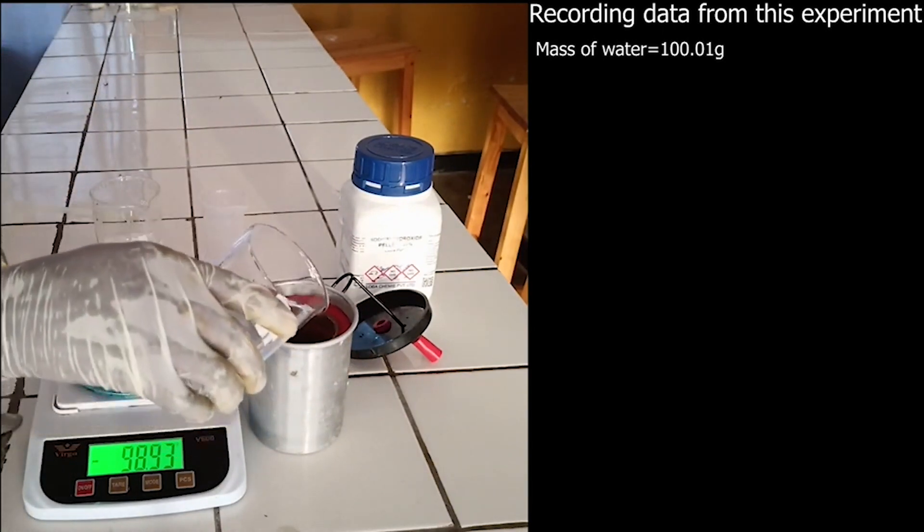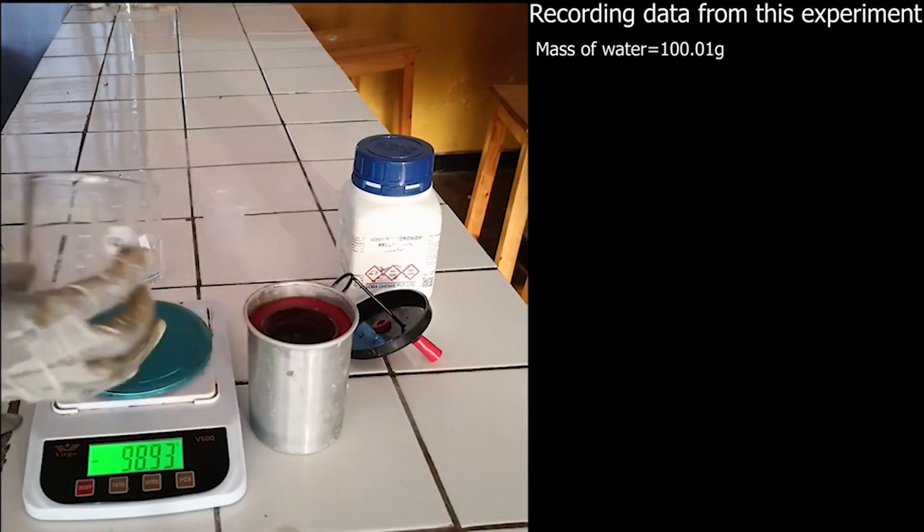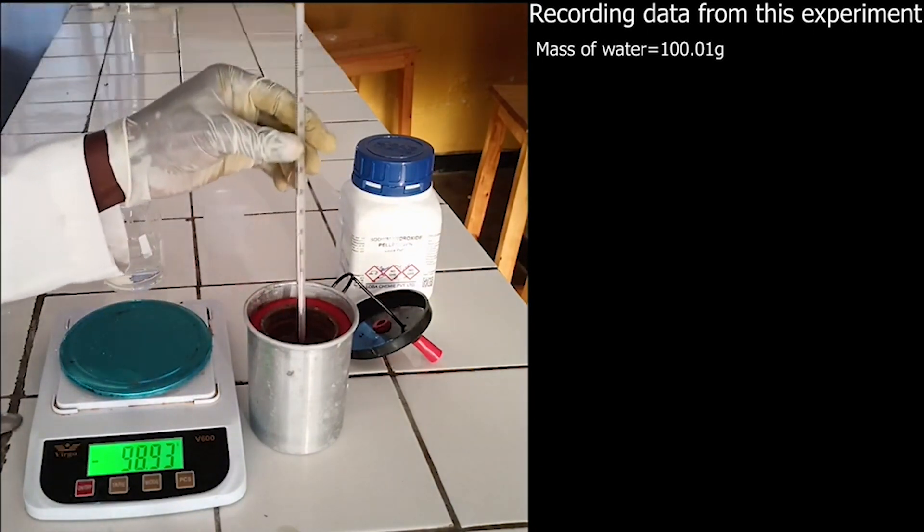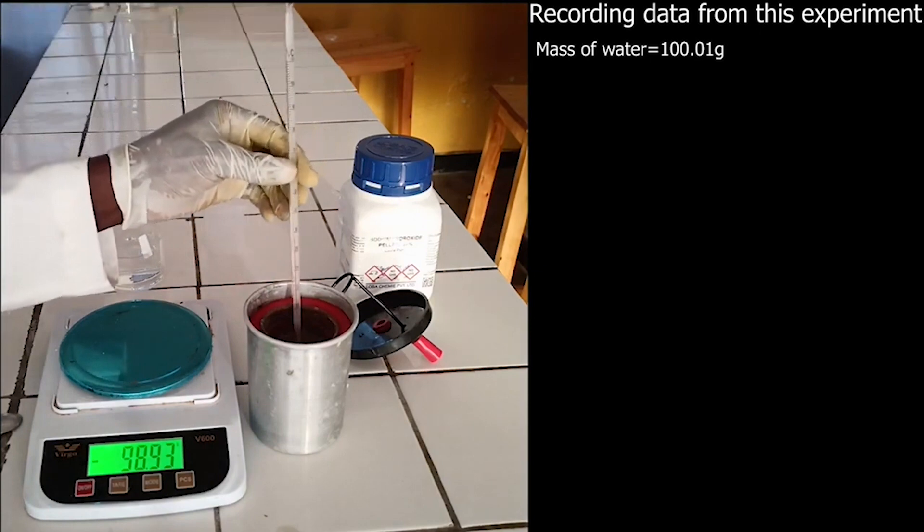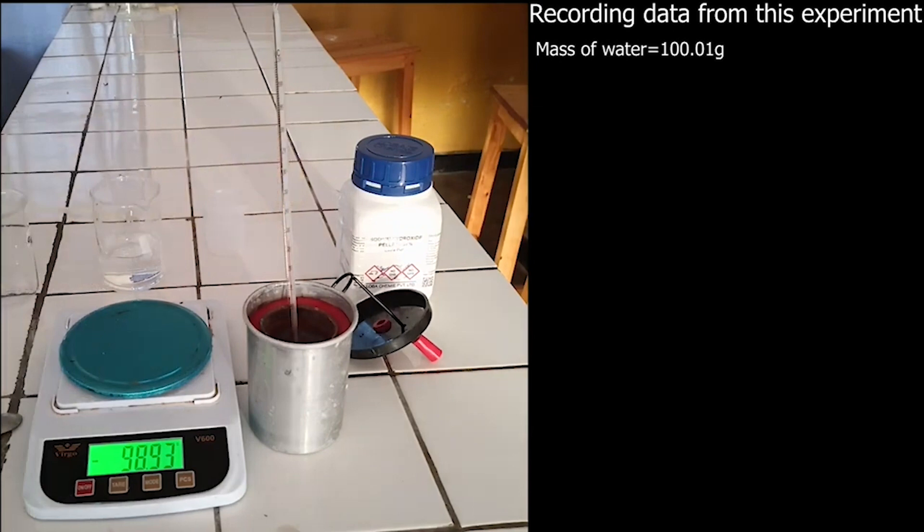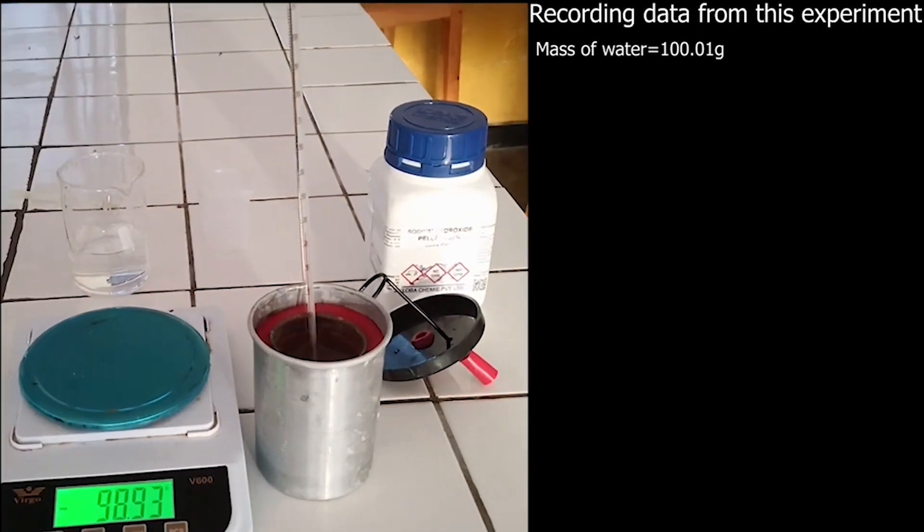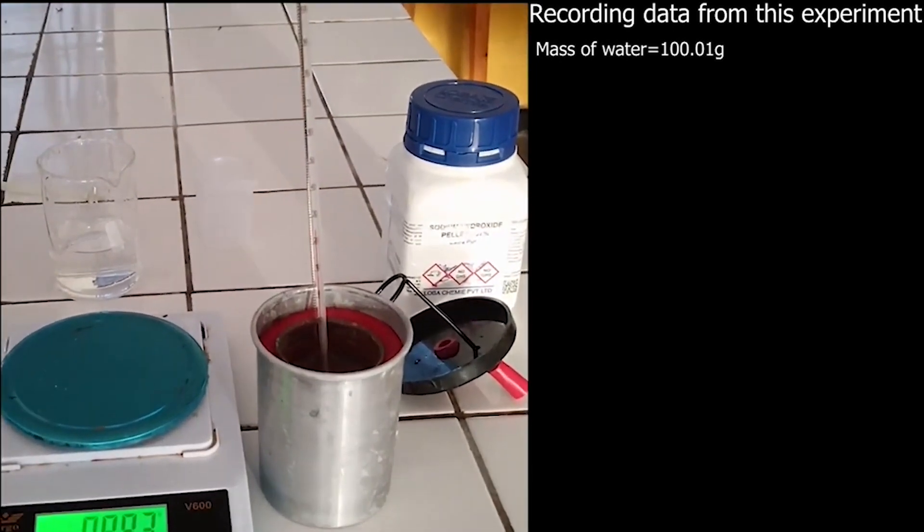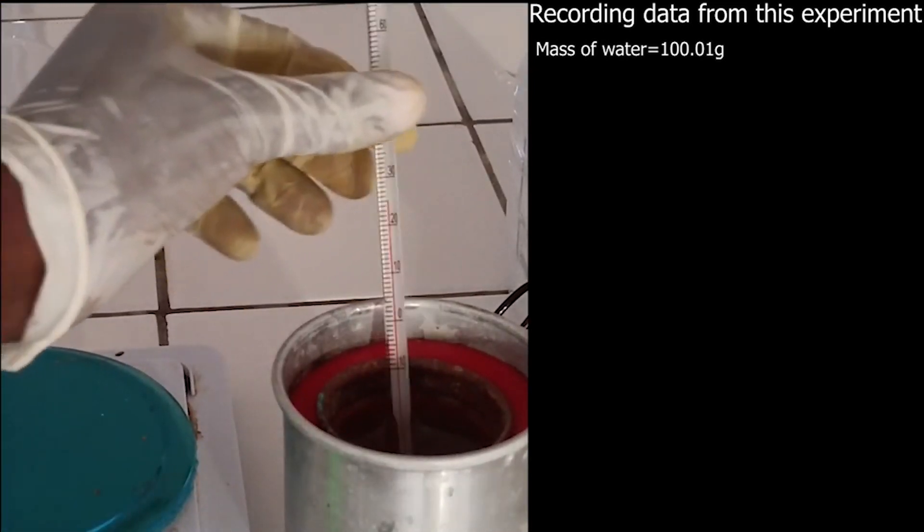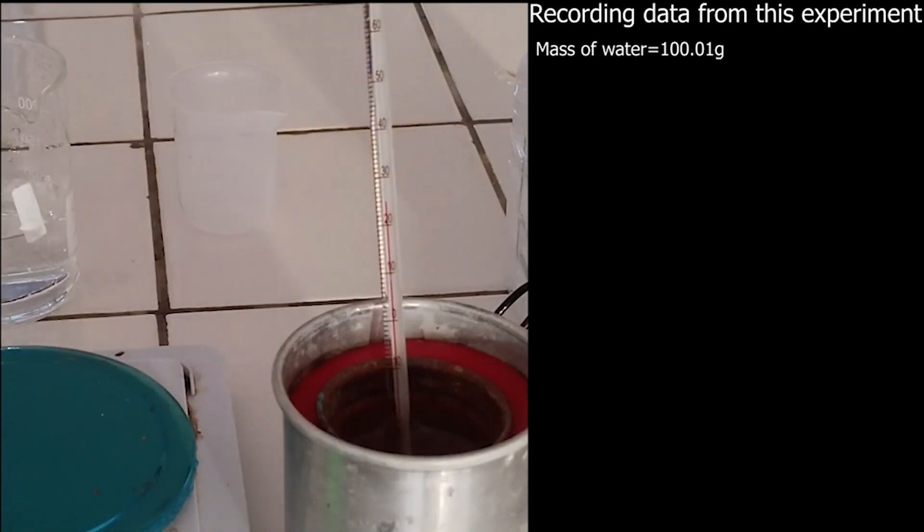Pour water in cup calorimeter. After pouring water in cup calorimeter, measure initial temperature of water. Initial temperature of water is 25 degrees Celsius.